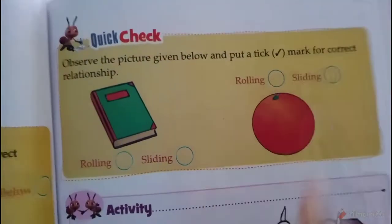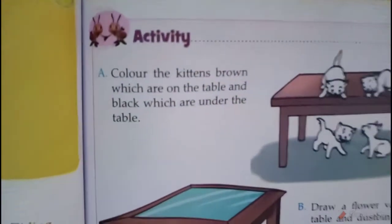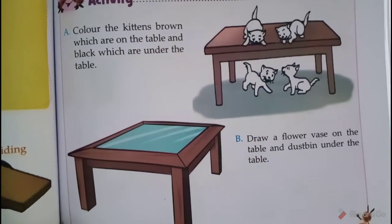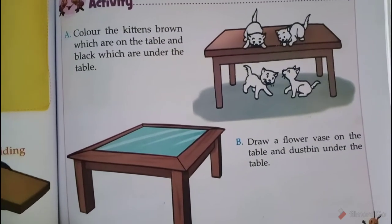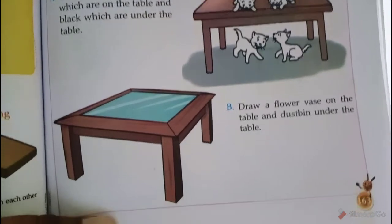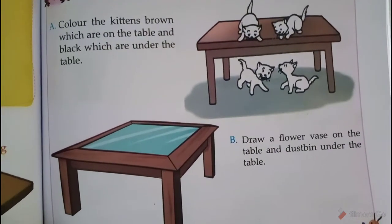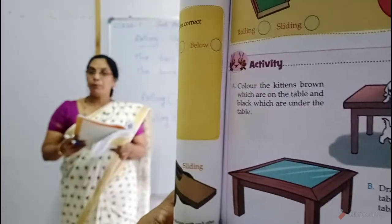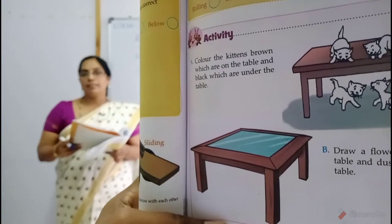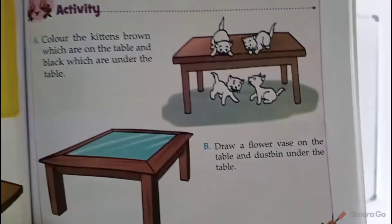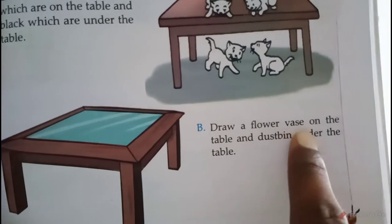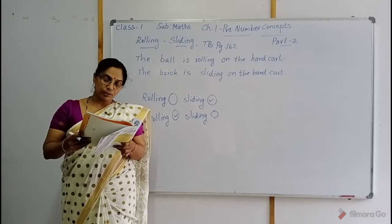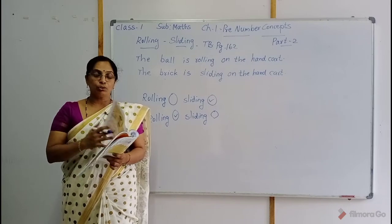The next activity for you, children: color the kittens brown which are on the table, and black which are under the table. Four cats are there — two are on the table, two are under the table. Color the two on the table with brown and the ones under the table with black. The next activity: there is a table. Draw a flower vase on the table and a dustbin under the table.